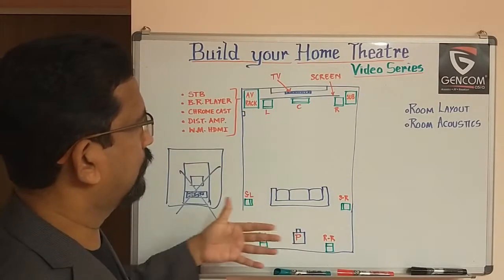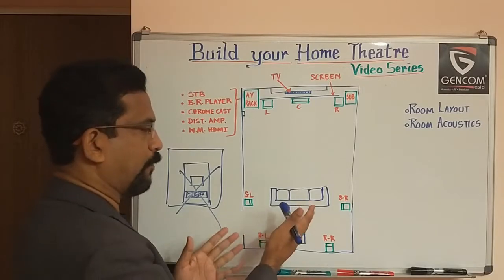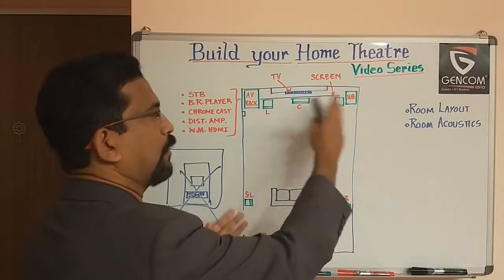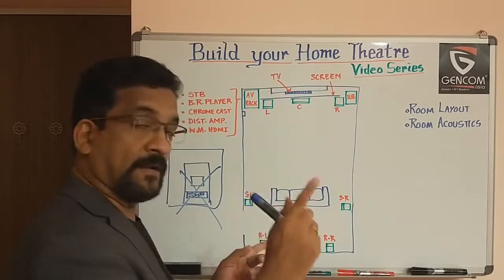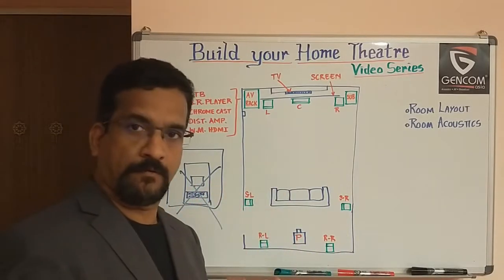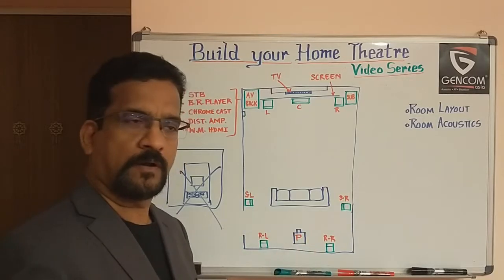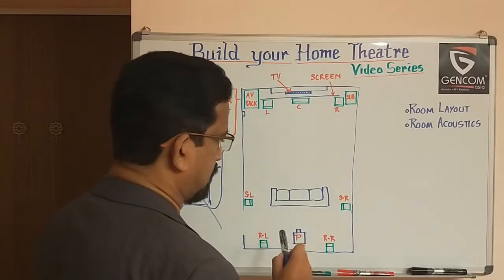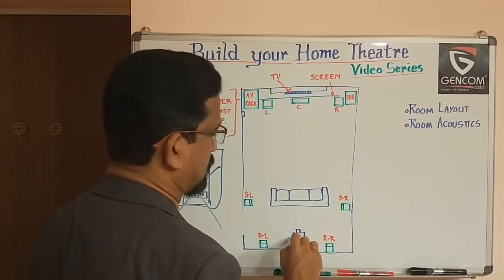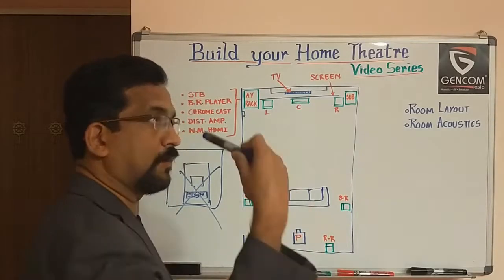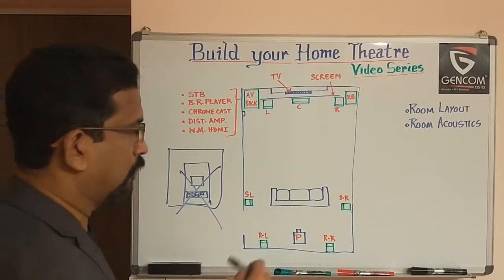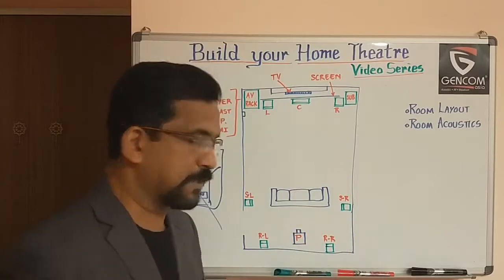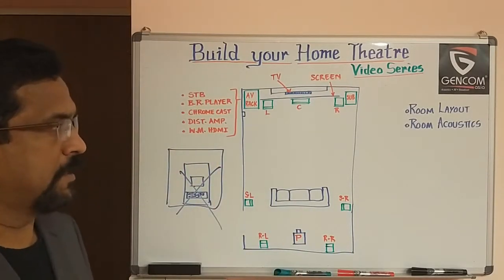This is a typical layout of the home theater. If you go for 5.1, then you don't need the two rear speakers — you can start with 5.1 and add two more later on. But as far as wiring is concerned, you can still do the wiring and keep it ready, and maybe buy the two extra speakers after a few months. The projector is positioned here and should be either ceiling-mounted or wall-mounted depending on the throw distance required from the screen, which I will talk about in subsequent sessions.